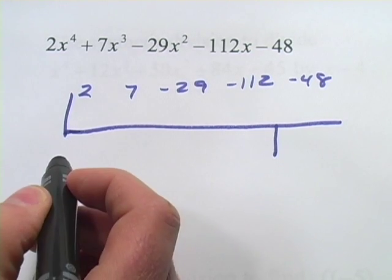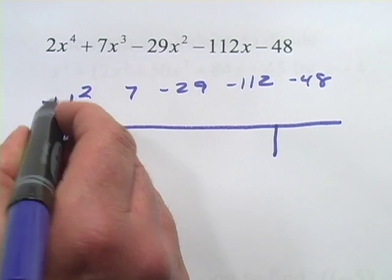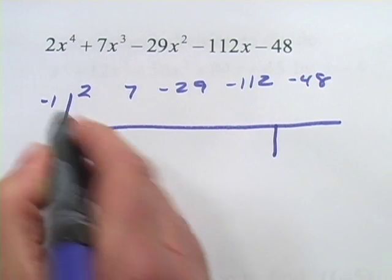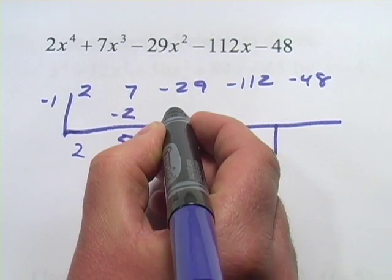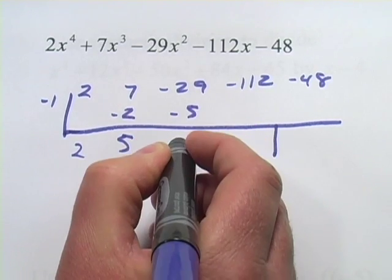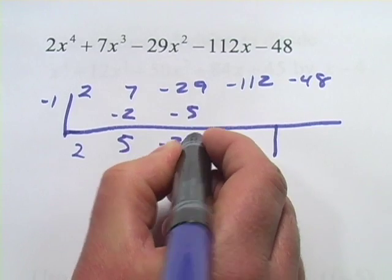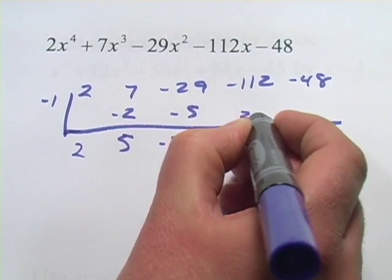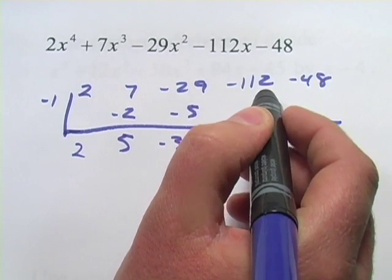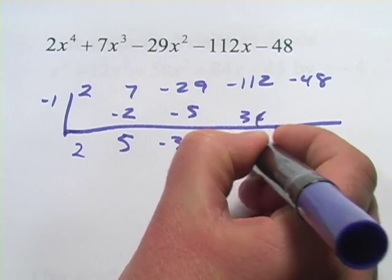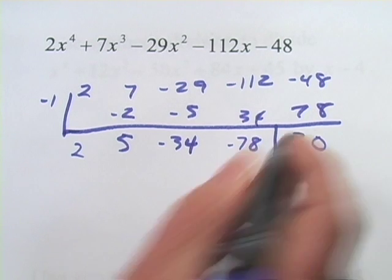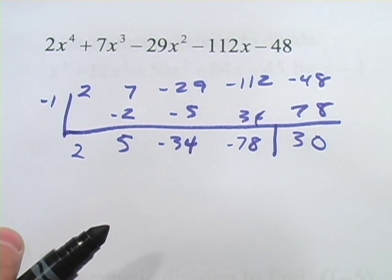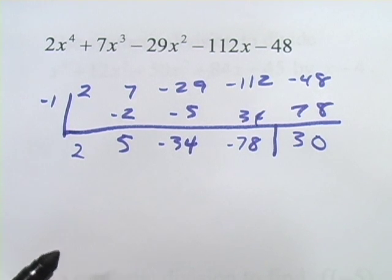So let's see. Maybe we'll try, I don't know, a negative 1. Bring the 2 down. Multiply. Add. Multiply. Add. Multiply. Add. Let's see. It's negative 78, I think. Multiply. And that definitely does not end up with a zero in the remainder position.